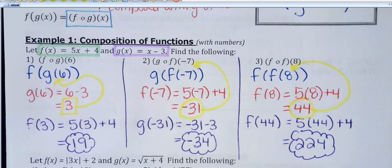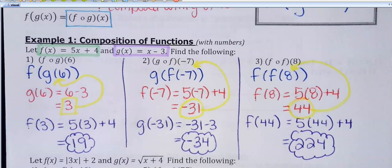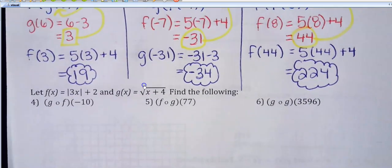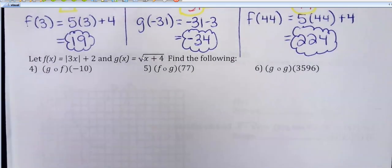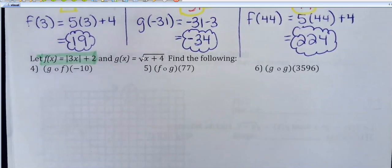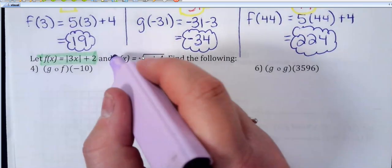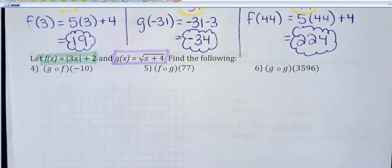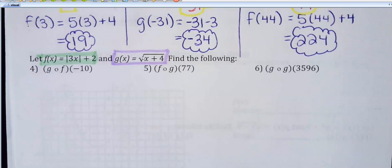You don't have to write out all that work — I'm just trying to show you where this comes from since this is probably the first time you've seen it. Now I'm going to have you try the three problems underneath. The function rules are different here: f of x is the absolute value of 3x plus 2, and g of x is the square root of x plus 4. None of the answers are weird — anything involving a square root will be a perfect square, so each question has a nice answer.